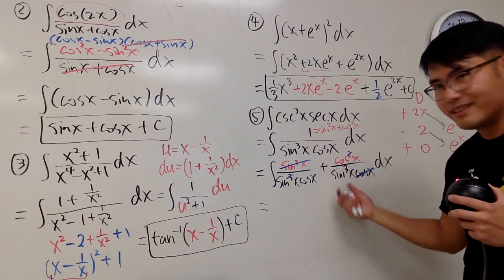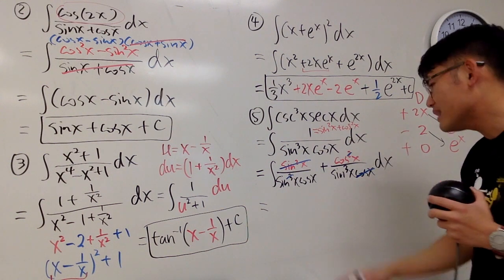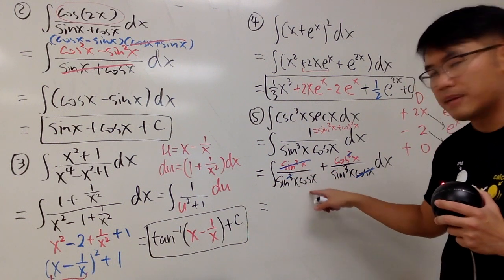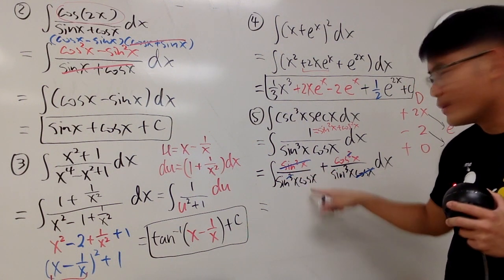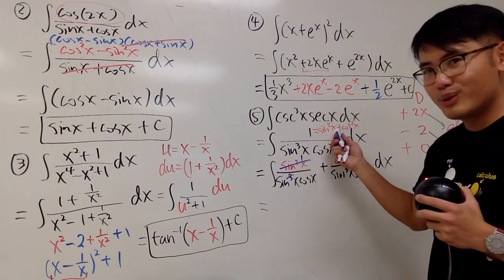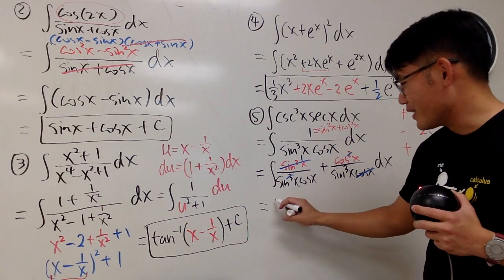You can do u-sub, because you have the cosine x on top to help you out. But the problem is that how can we integrate 1 over sine x times cosine x? Well, don't forget, this right here is technically a 1 now, and we can do this again. So I will write this down right here for you guys.